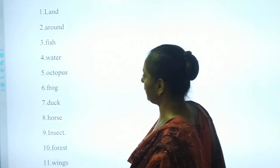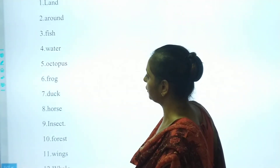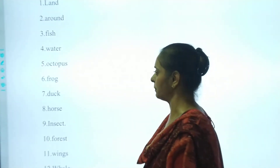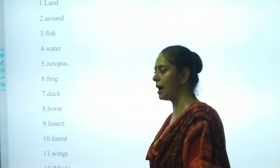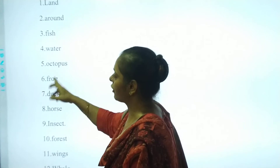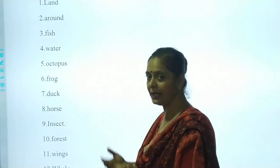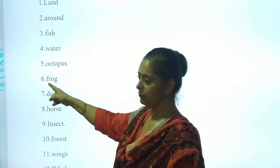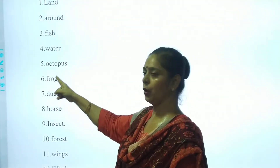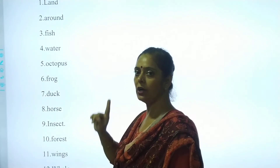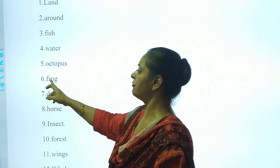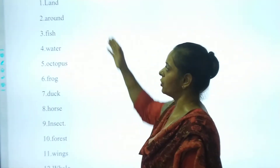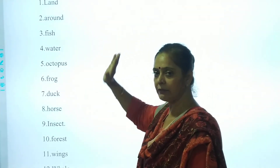I will be repeatedly telling you and will repeat the spelling again and again so it should be clear in your mind. Frog. Spelling: F, R, O, G. F, R, O, G. It's called Frog. F, R, O, G. All these spellings — all five — are clear.